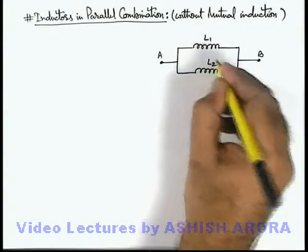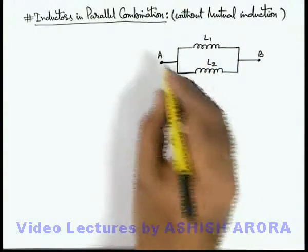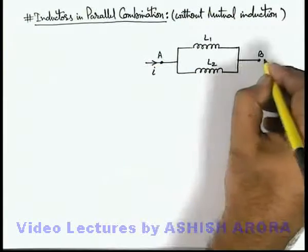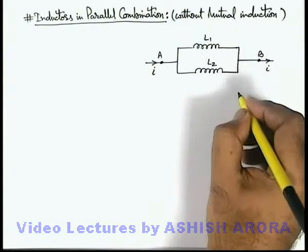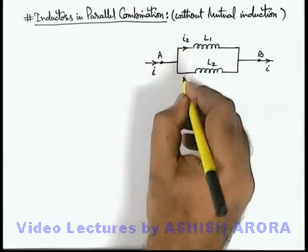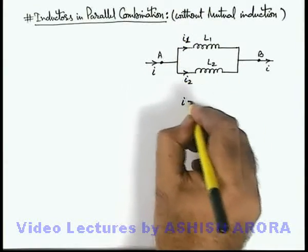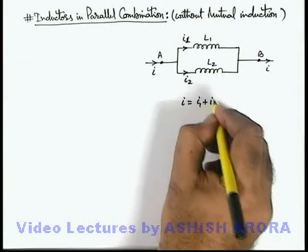Say if we have two inductors L1 and L2 connected across terminals A and B, and from terminals A and B a current i is flowing. Obviously through the two inductors current will be divided as i1 and i2, and we can write the value of i as i1 plus i2.